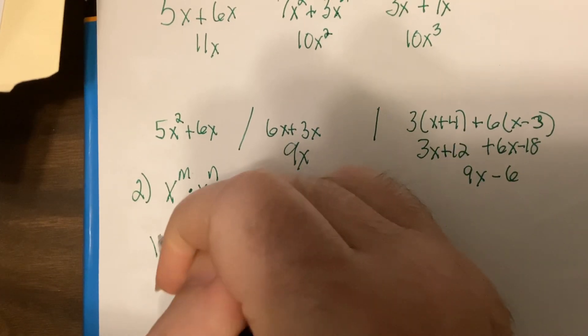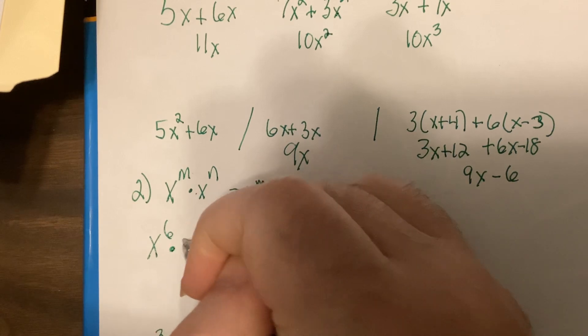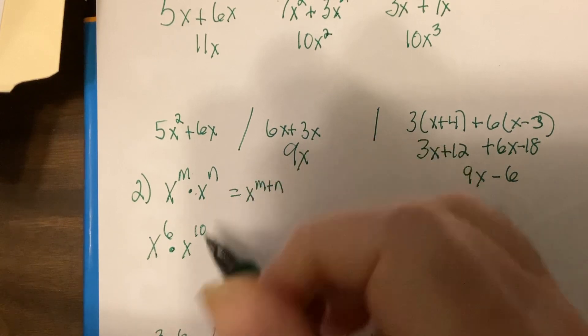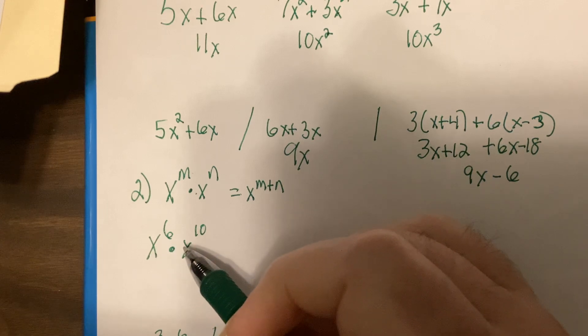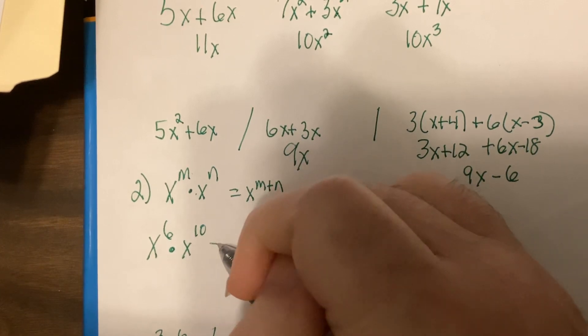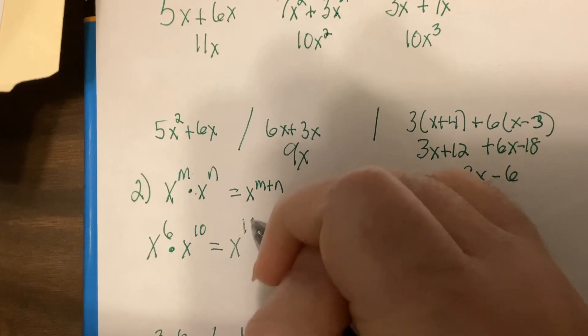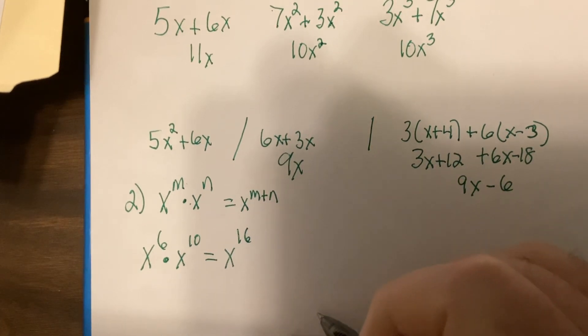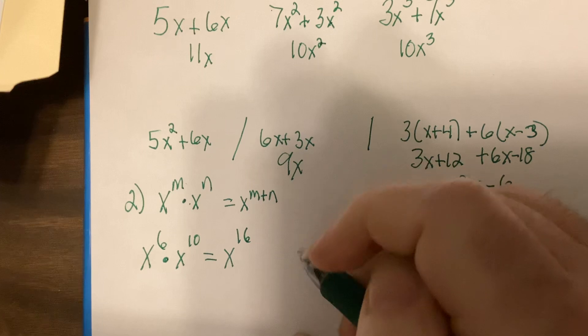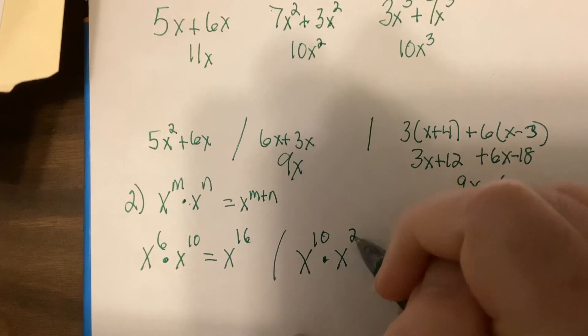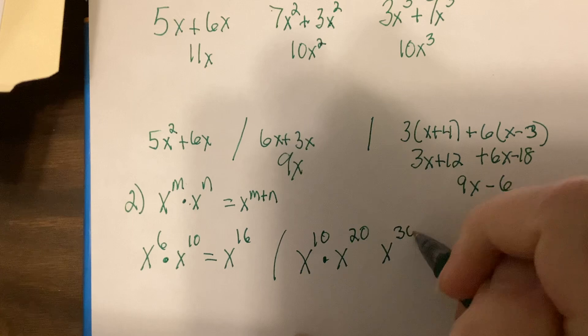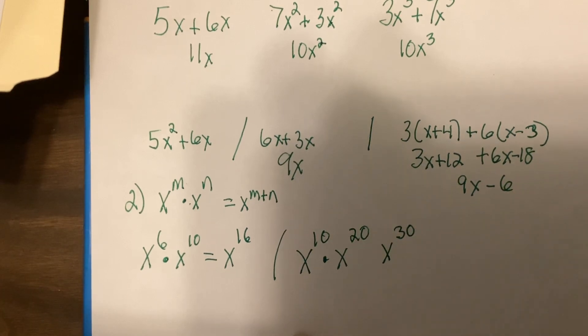So, for example, X to the 6th times X to the 10th. I have 6 Xs multiplied together. I have 10 more Xs multiplied together. So, all together, I have 16 Xs multiplied together. So, if I had X to the 10th times X to the 20th, I would have X to the 30th.